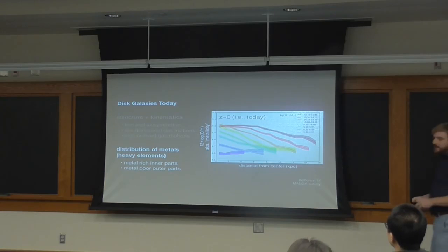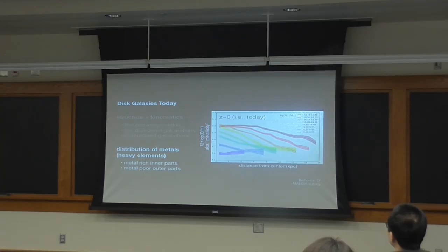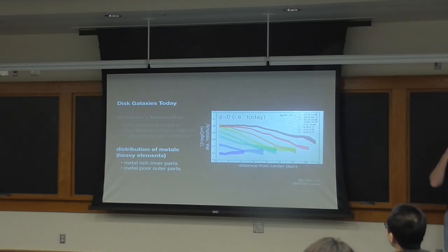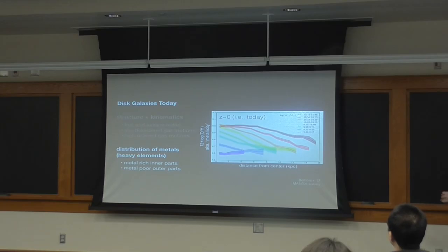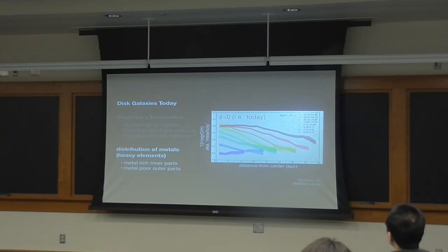Here's a census of the local universe. On the vertical axis is the oxygen abundance — the relative number of oxygen atoms to hydrogen atoms — and we're going to use this as a proxy for metallicity. On the x-axis is the distance from the center. These are observations from the MANGA survey. Each line is a different mass. Above about 10^9 — above about the mass of the SMC — the oxygen abundance tends to rise toward the center. These things are more metal-rich in their centers than in their outskirts.